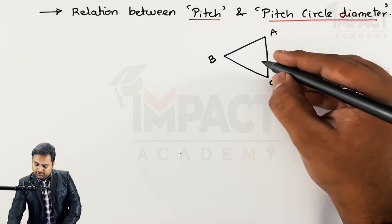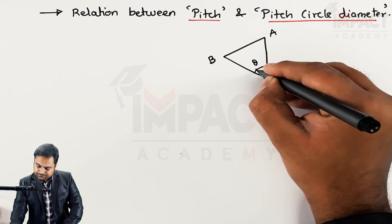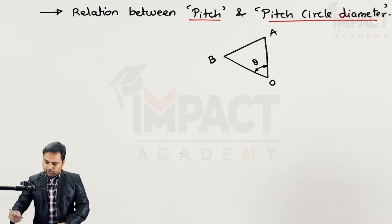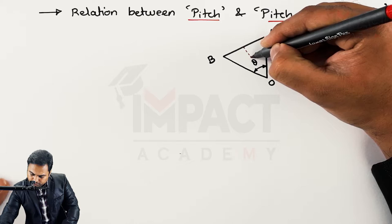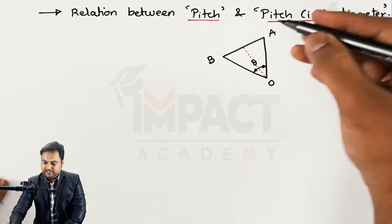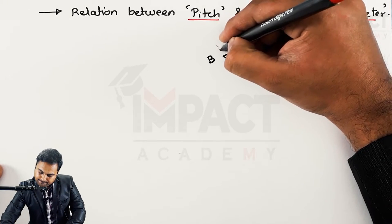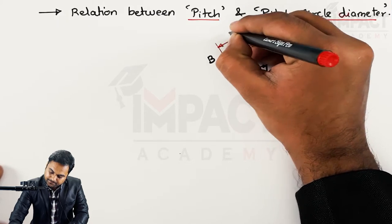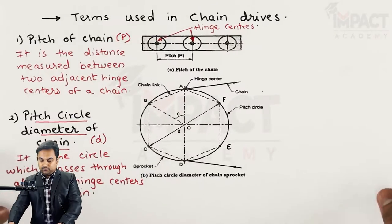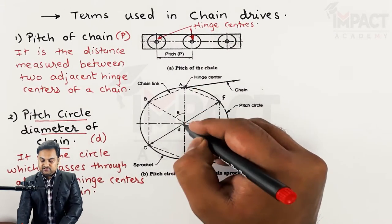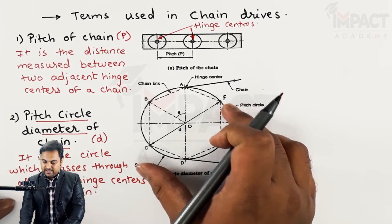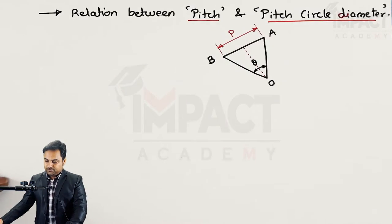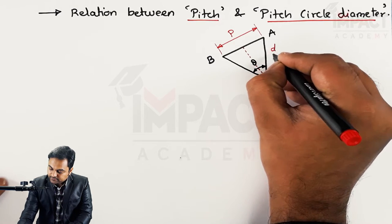Triangle AOB has angle AOB equal to theta. A and B are the hinge centers, and O is the center of the sprocket. The distance AB represents the pitch P of the chain. Since the pitch circle diameter is D, the distance OA is the radius, which equals D/2.